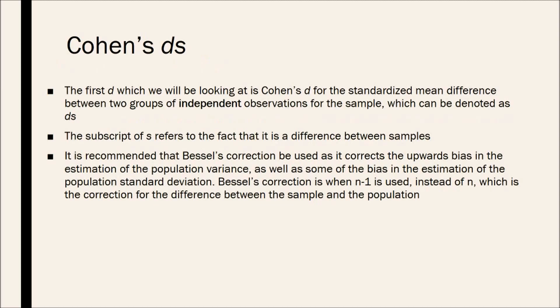So Cohen's DS, the first D which we will be looking at is Cohen's D for the standardized mean difference between two groups of independent observations for a sample, which can be denoted as DS. The subscript of S refers to the fact that this is the difference between samples.